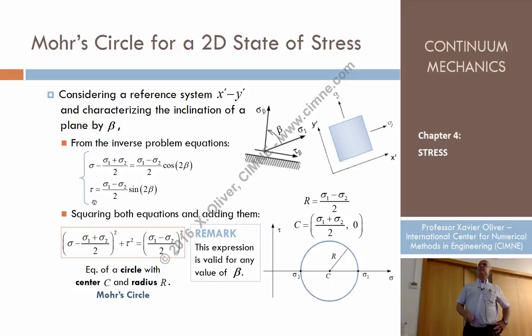Squaring this side I have sigma minus sigma 1 plus sigma 2 divided by 2, squared, plus tau squared at the left hand side, and at the right hand side we have this term which is common, sigma 1 minus sigma 2 squared divided by 2.